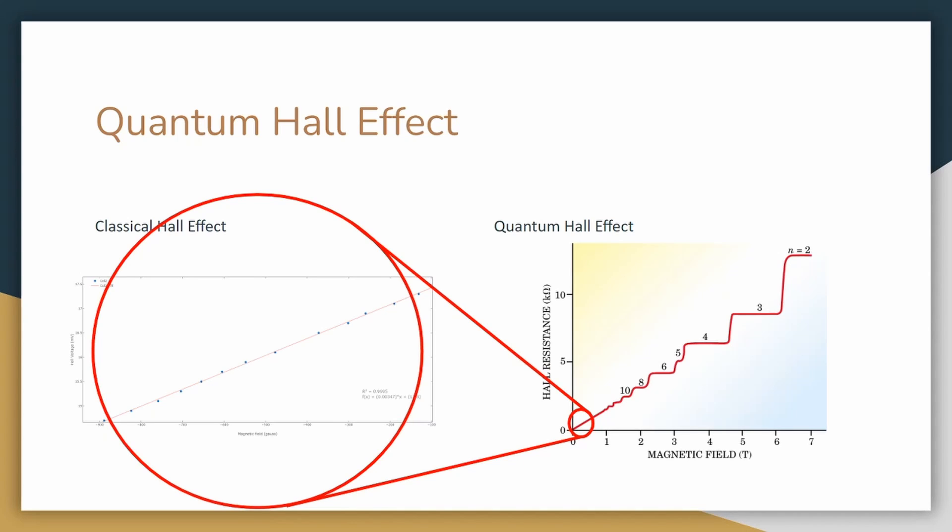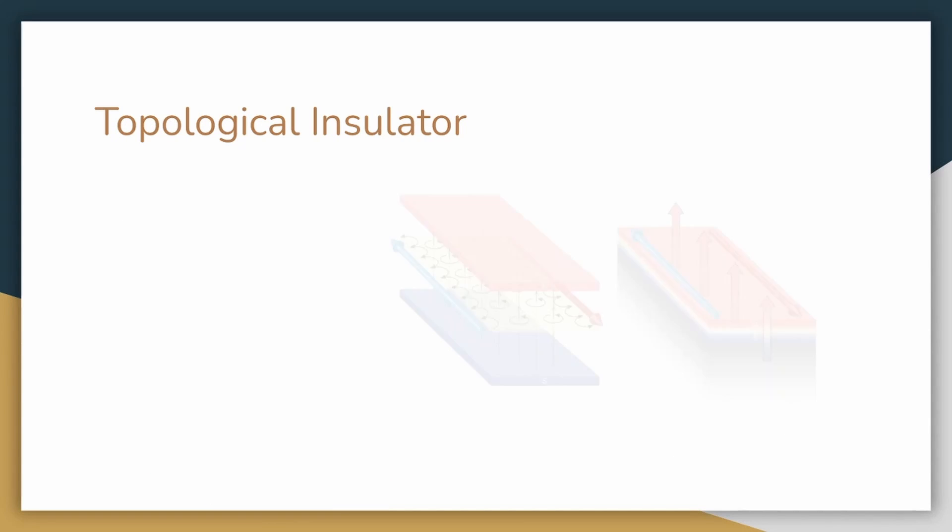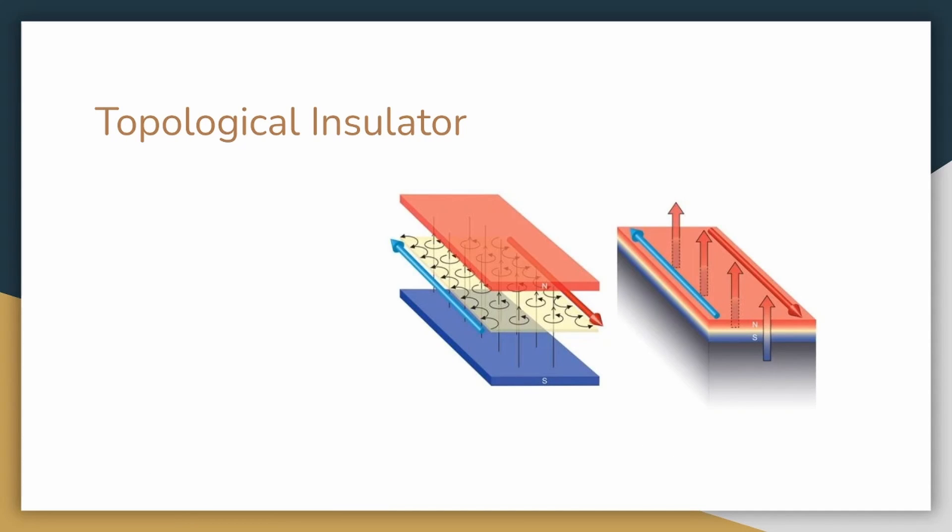And thus, the topological insulator is discovered. What causes this effect? It is true that the bulk material remains as an insulator. This is one of the topological classes. The vacuum is another topological class.